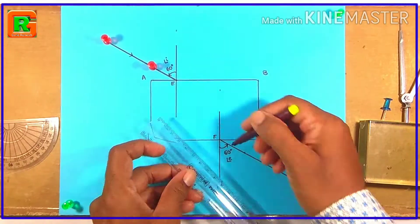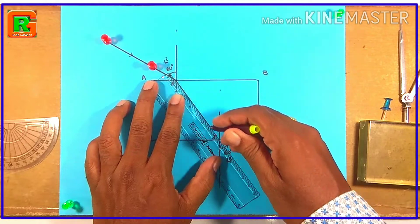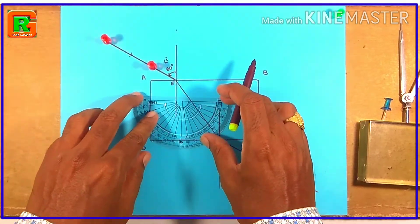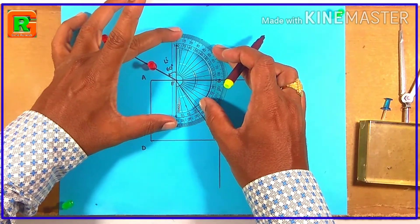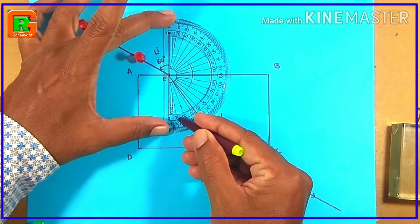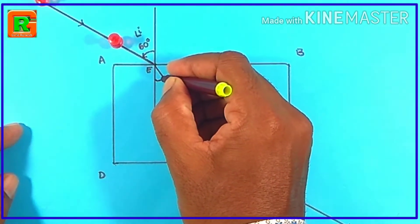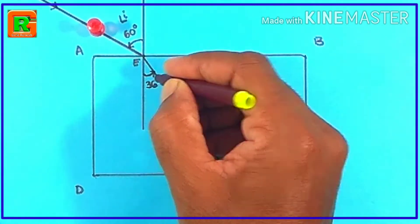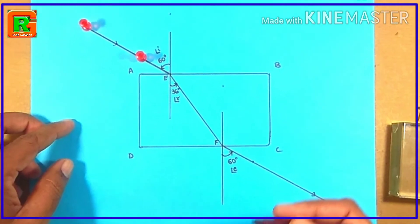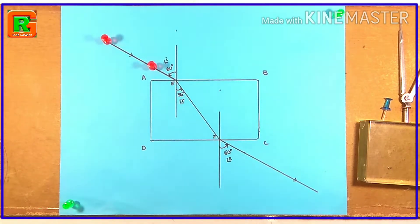Join the two points E and F in a straight line — this line represents the line of refraction. The angle of refraction is denoted by R. Measuring it gives 36 degrees, so angle R equals 36 degrees. Both interior refraction angles are equal, each being 36 degrees.